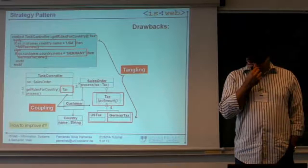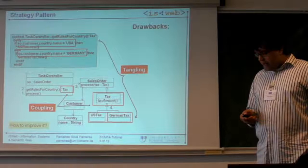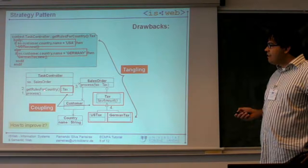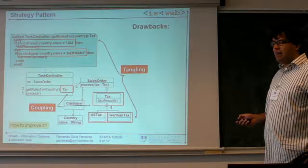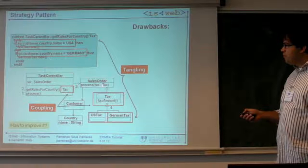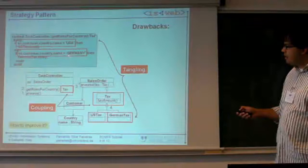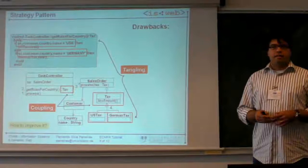Another problem is the tangling. Here at the class TaxController you are defining what the class USTax and GermanTax are. You are doing this if condition and what you are doing is basically defining what a USTax is and what a GermanTax is. So you have this thing in your code, and these things are completely separated and they are dependent from each other.